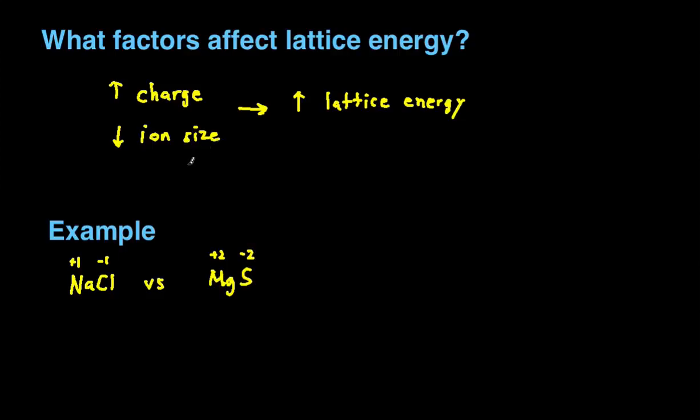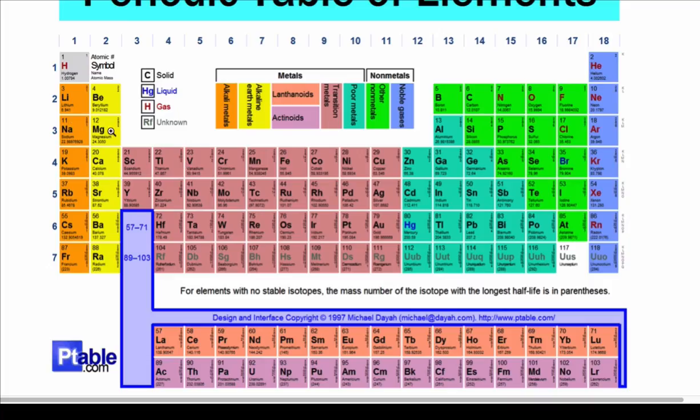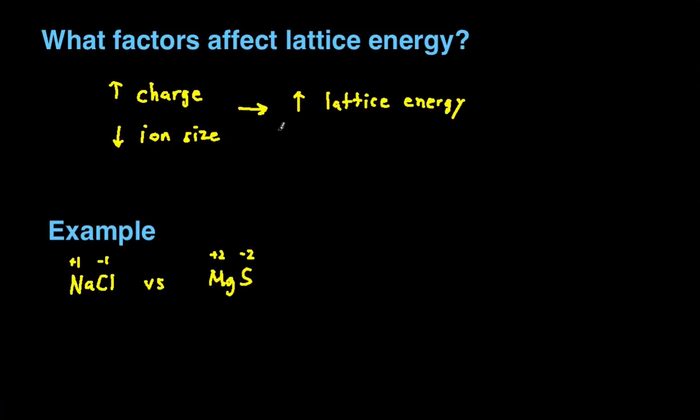In terms of ion size, you can see that sodium, magnesium, sulfur, and chloride are all in the same row, which means they are of similar sizes. So we can ignore ion size here and solely focus on charge.